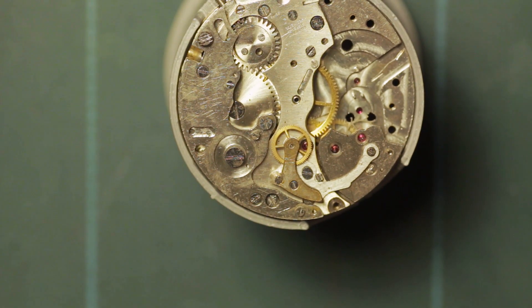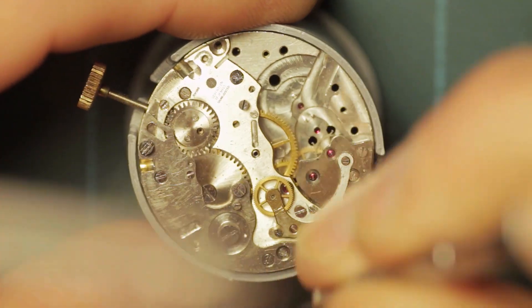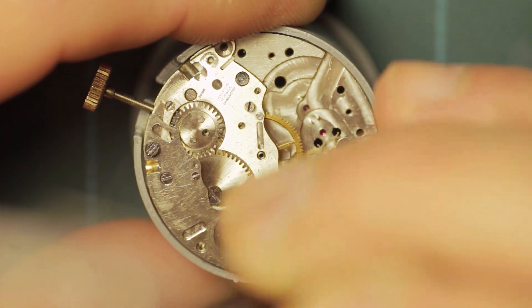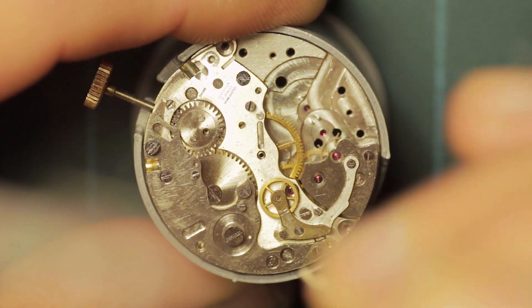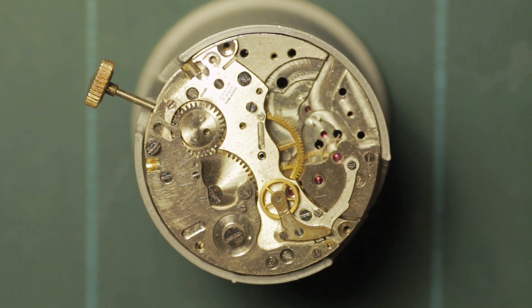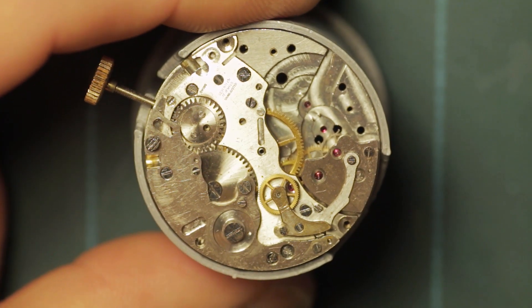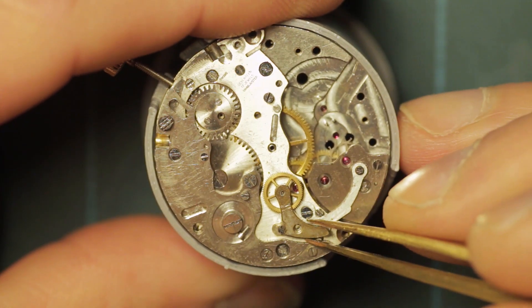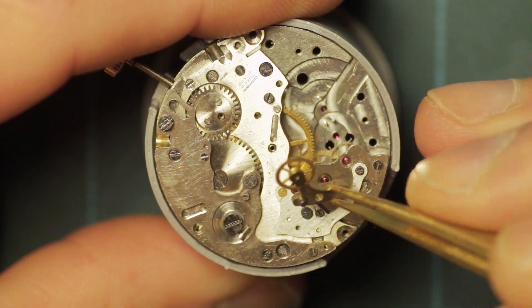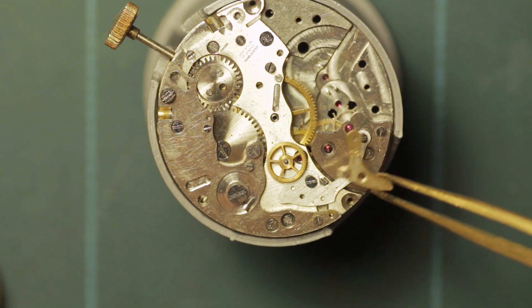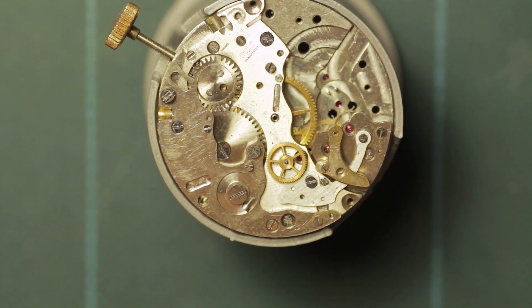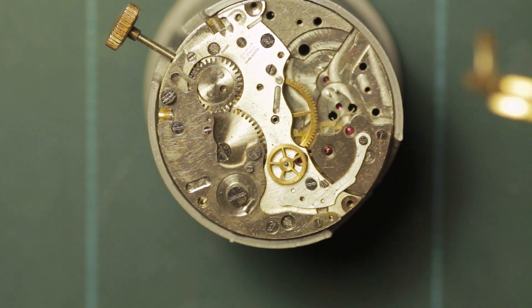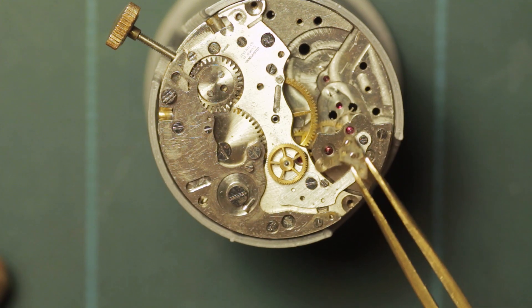And now remove the return spring or the tension spring for the intermediate wheel that connects the fourth wheel to the chronograph runner. And again, this is disassembled into its component parts while it is still fixed to the bridge. On reassembly, however, it will be assembled prior to the whole thing being fitted back to the bridge, so that both of the oil sink holes on the wheel can be oiled first of all.